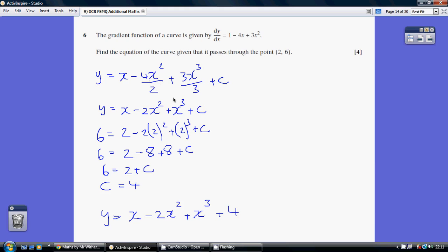Obviously, 4 over 2 is 2, 3 over 3 is 1. Now, half the marks are going for working out what our unknown constant, c, is.